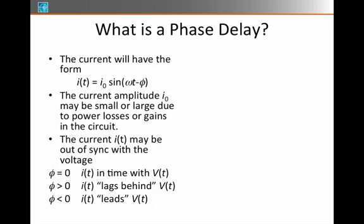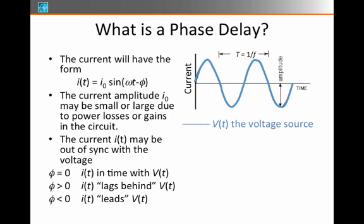When φ is less than zero, i is actually out ahead of the voltage. It leads the voltage. If the graph of voltage versus time looks like a sinusoid, it's the blue curve right here, then the graph of current versus time looks like this curve, the green dashed curve, in the case when φ is zero. There's no phase delay.